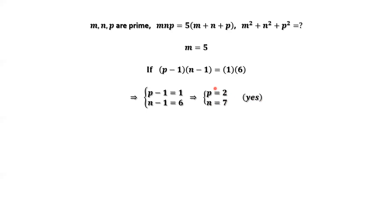If we switch the order to 6, 1, the final answer is p equals 7, n equals 2. It doesn't matter for the final answer. Now we have three numbers: m equals 5, n equals 7, p equals 2.